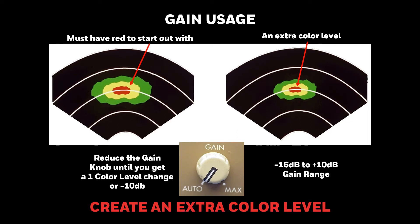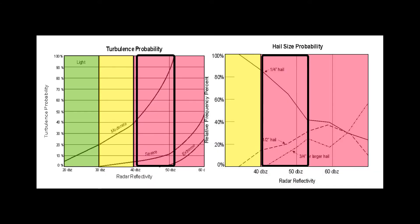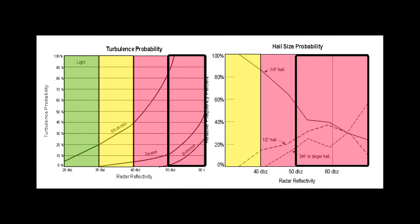Also, using gain reduction, you can effectively create another color level. The system has a gain range of minus 16 dB to plus 10 dB. If you reduce the gain until red turns to yellow, yellow turns to green, and the green disappears, you've just reduced the gain 10 dB, and you know any red remaining is at least 50 dBZ. This lets you know that you're dealing with a more dangerous cell. Note that you need red reflectivity to start out with for this to work.